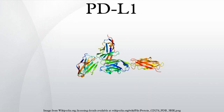Binding: PDL1 binds to its receptor PD1, found on activated T cells, B cells, and myeloid cells, to modulate activation or inhibition. The affinity between PDL1 and PD1, as defined by the dissociation constant Kd, is 770 nM.